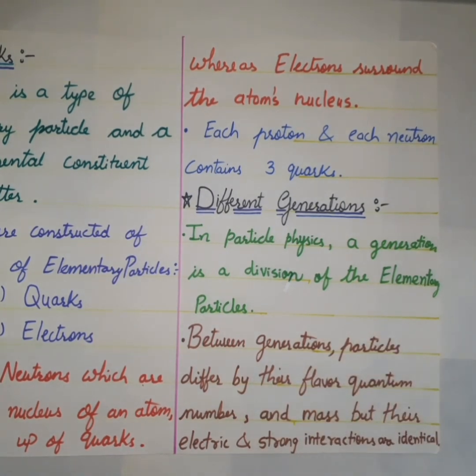Whereas electrons surround the atom with nucleus, each proton and each neutron contains three quarks. The quark structure for proton is UUD and the quark structure for the neutron is UDD.